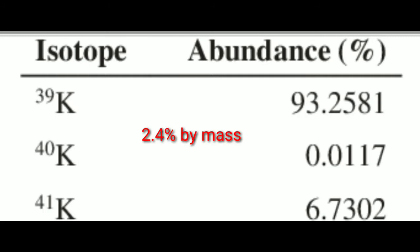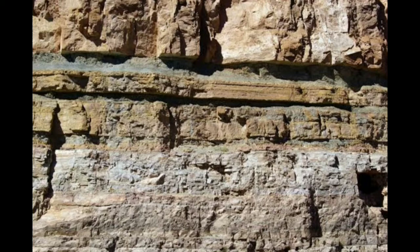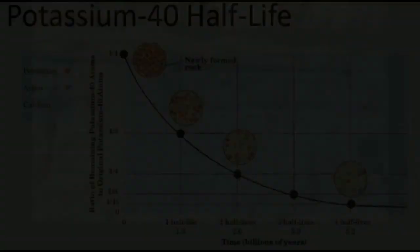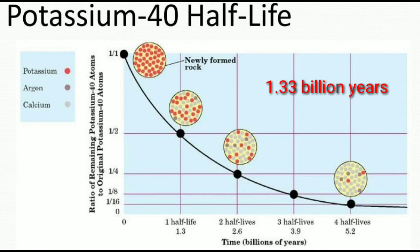Potassium-argon dating. This method is also a radioactive method. Potassium is one of the most abundant elements in the earth's crust, almost 2.4 percent by mass. Amongst its three isotopes, radioactive potassium-40 is used for dating old volcanic rocks. From this you can also date other types of rocks or fossils sandwiched between the layer of volcanic rocks. One out of every 10,000 potassium atoms is radioactive potassium. It has a half-life of 1.33 billion years, which further decays into argon-40 and calcium-40.